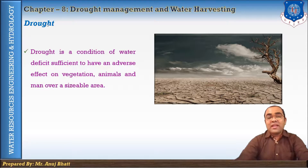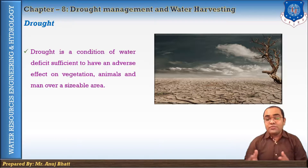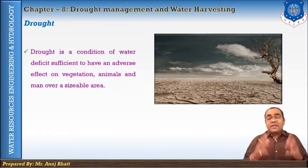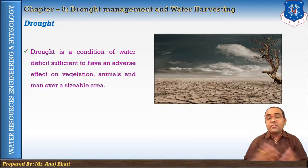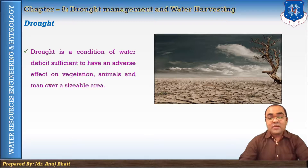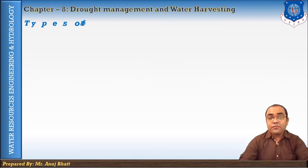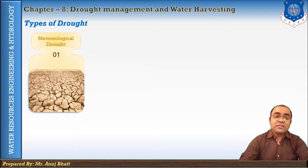Drought can be prevented, mitigated, and reduced. If we all work together to solve this problem, then drought is not a disaster but a management issue. Now we will discuss a few types of droughts. The first is meteorological drought.